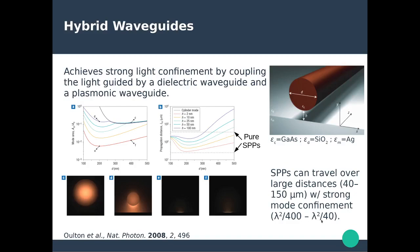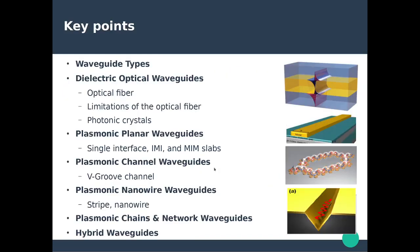To conclude, we've discussed different types of photonic waveguides including dielectric optical waveguides and optical fibers, their limitations, and photonic crystals. We discussed various types of plasmonic waveguides: two-dimensional planar waveguides, v-grooves, stripe and cylindrical nanowire waveguides, and nanoparticle chain and cluster networks for propagating plasmonic signals. Finally, we briefly introduced hybrid waveguides that make use of both the dielectric component and the metallic plasmonic elements.